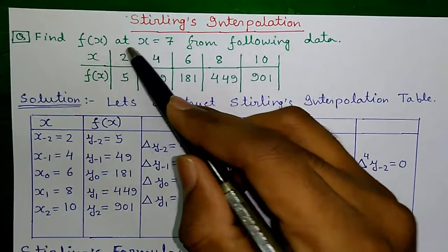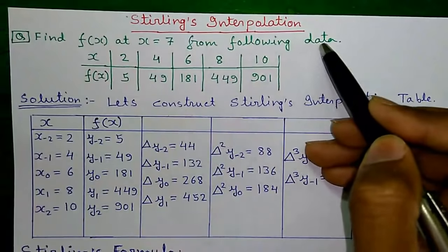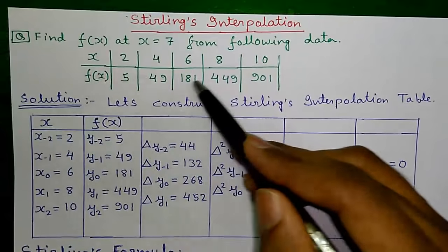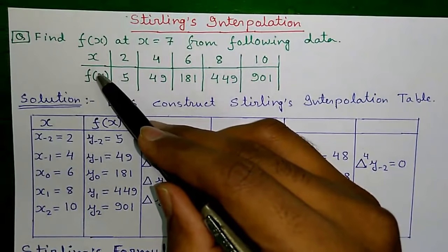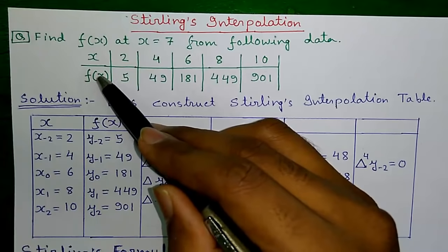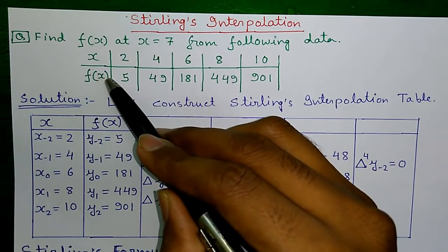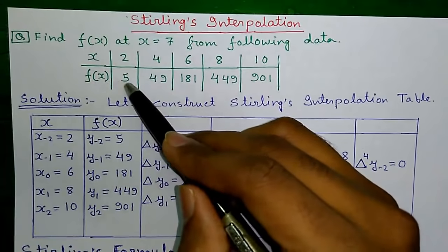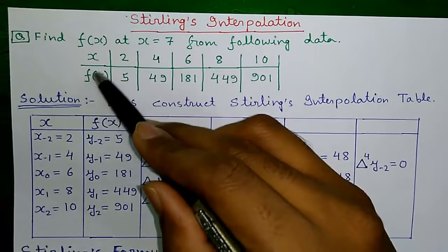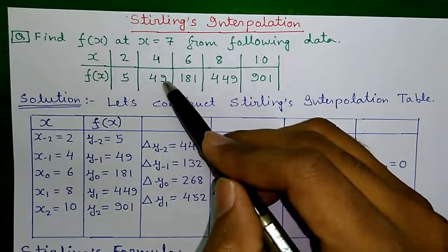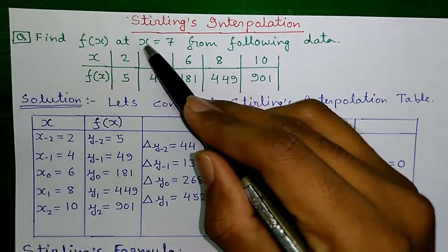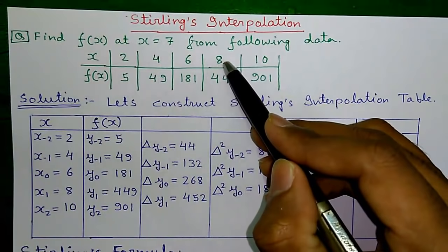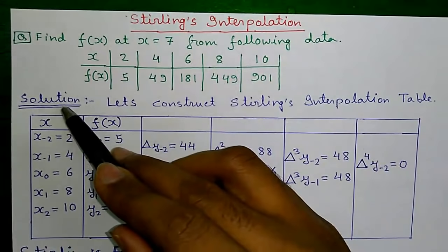Our question is: find f of x at x equals to 7 from the following data. Some values of x are given and corresponding f of x values are also given. f of x stands for function of x, where depending on the value of x the value of the function will change. For x equals to 2, f of x is equal to 5; for x equals to 4, f of x is equal to 49, and so on. We have to find out f of x for x equals to 7, and 7 is not in the table. So let's proceed to the solution.